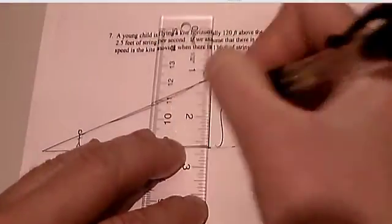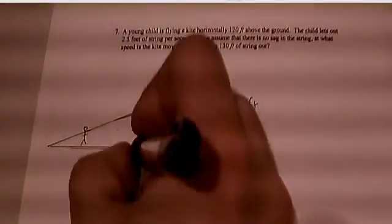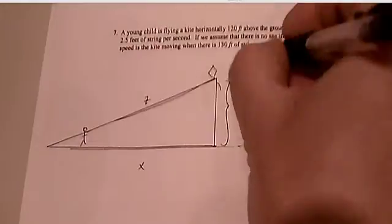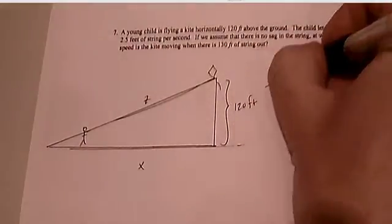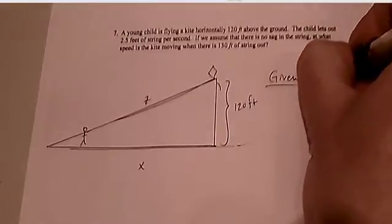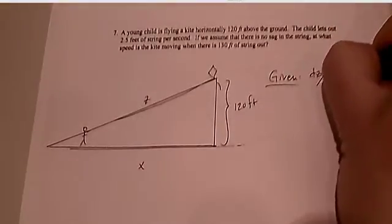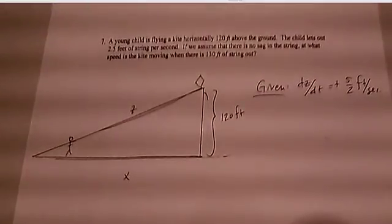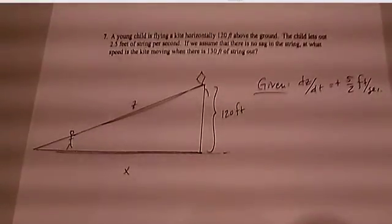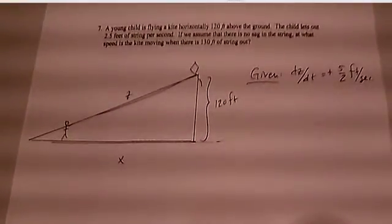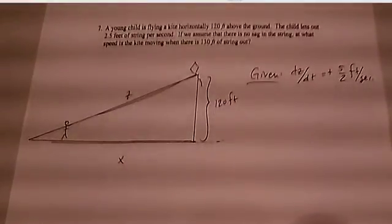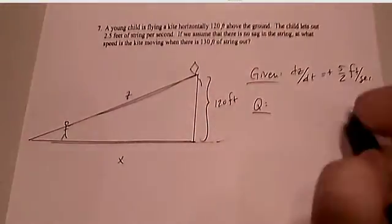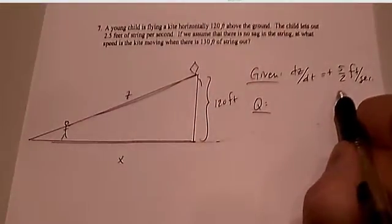The child lets out 2.5 feet of string per second. Well, of course we're assuming a whole lot here. We're assuming that it's right on the ground where he's holding it. Let's say that he's laying on the ground while he's flying the kite, I suppose. Remember, it's ideal circumstances when we're dealing with a math problem. And you have X, and 120 is your Y. It's not going to change. And your Z. So your given information is the fact that dZ/dt is a positive 5 halves feet per second. Z is getting larger, he's letting string out. Or she, or I don't know. Let's call her Darla. So Darla's letting out string at 5 halves feet per second.